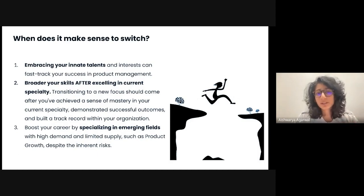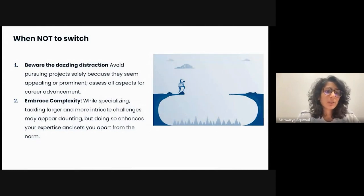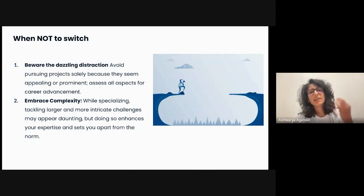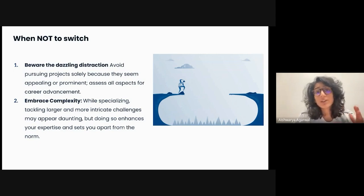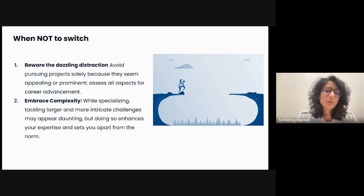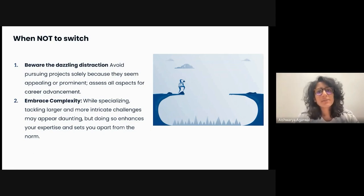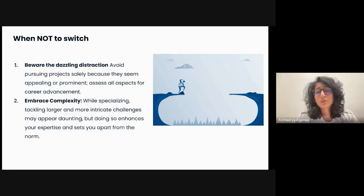When does it not make sense to make the switch? First, really think about not jumping to the first thing that catches your eye. Beware that dazzling distraction — avoid pursuing something solely because it seems prominent or appealing, and really assess all aspects of your career advancement. This is where it helps to have a plan. Second, don't be afraid of embracing complexity. A lot of us would think that if the role starts to get challenging or complex, maybe you're better than this and you can succeed if you just jump ship and move on to something else. It's very tempting, and you will succeed — but resist the urge. When the going gets tough, that's when you can lean in. That also helps you sharpen your product management skills. You should be able to handle conflict and work through difficult situations, which are also very valuable PM skills. Think about sticking around and embracing that complexity whenever it arises instead of just jumping onto a new thing.